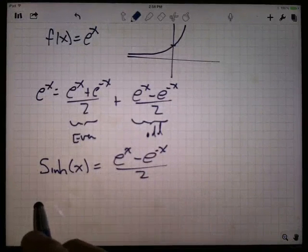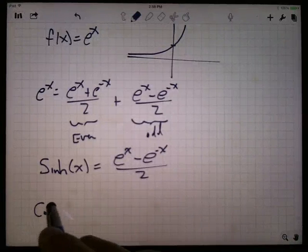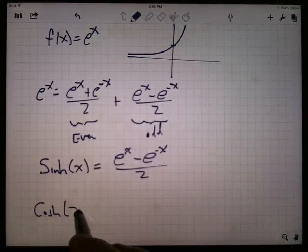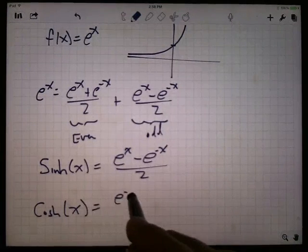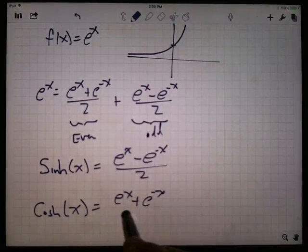And we take the even part and we call it the hyperbolic cosine. So the cosh of x is e to the x plus e to the minus x over 2.